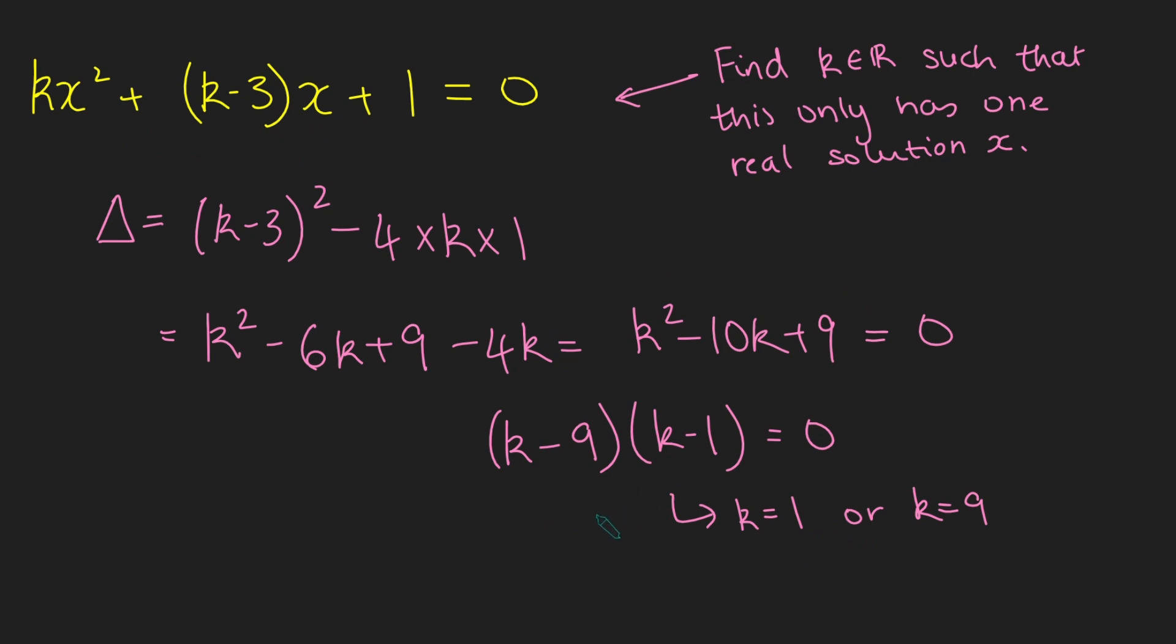However, there is an additional value of k. And that comes because this logic only applies if this guy here is actually a quadratic. It doesn't actually make sense to talk about the discriminant of a linear function. And we need to check that this is actually always a quadratic.